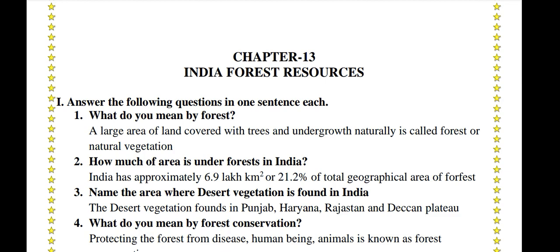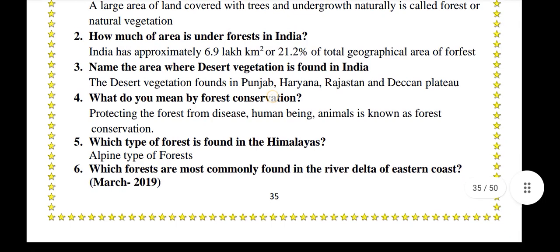Name the area where desert vegetation is found in India. Desert vegetation is found in Punjab, Haryana, Rajasthan, and the Deccan Plateau.